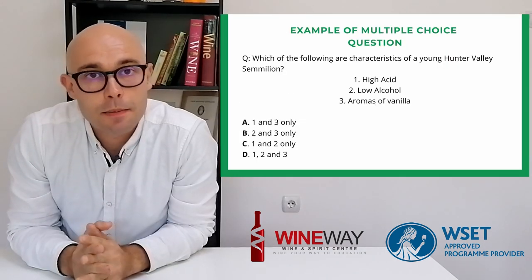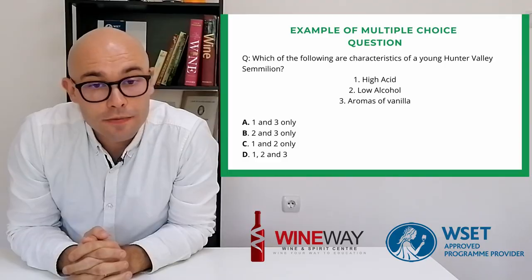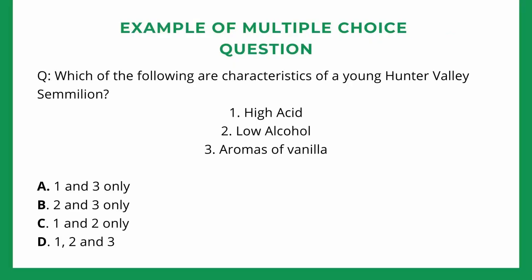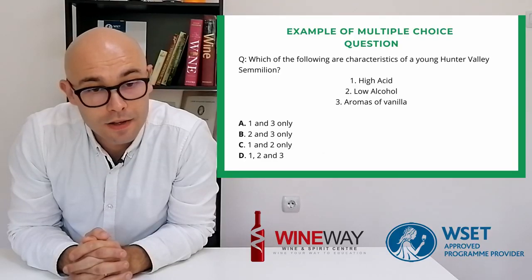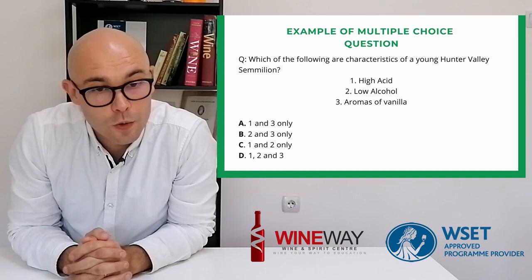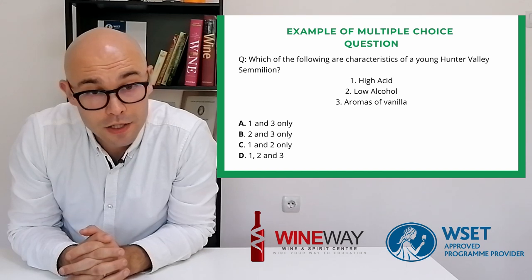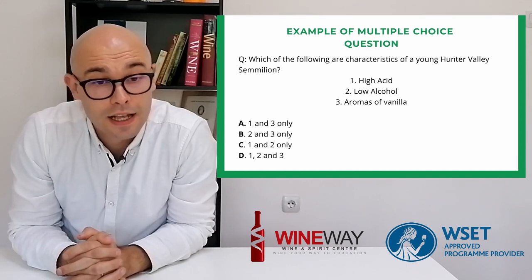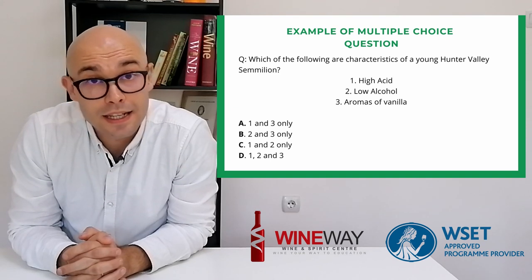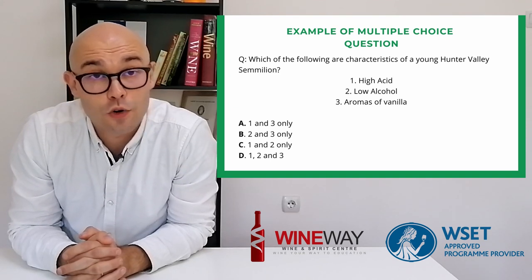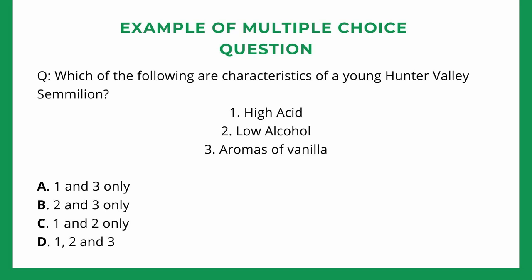Here is another multiple choice example: Which of the following are characteristics of a young Hunter Valley Semillon? The options given are: 1 — high acid, 2 — low alcohol, 3 — aroma of vanilla. The answer choices are: A — one and three only, B — two and three only, C — one and two only, D — one, two and three. Hunter Valley Semillon is known for high acidity and low alcohol, and needs time in bottle to develop its aromas — it is not aged in oak. Therefore the correct answer is C, one and two only.